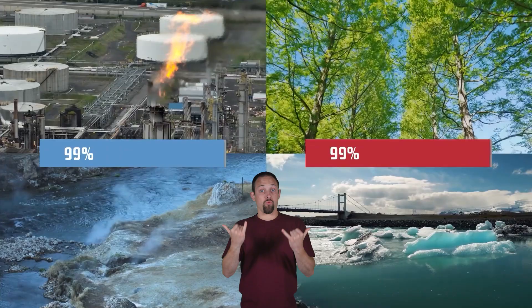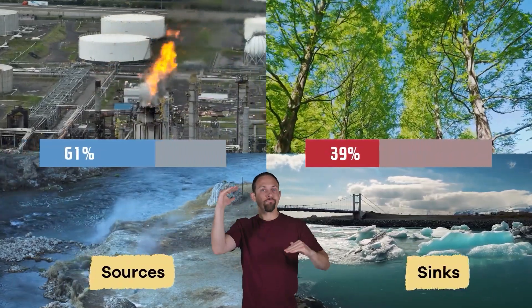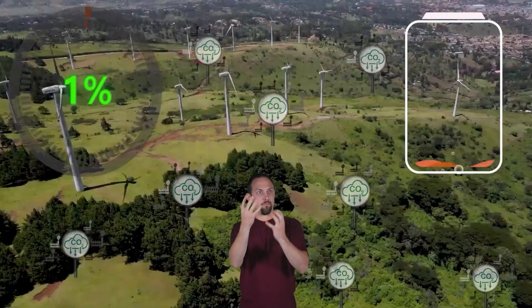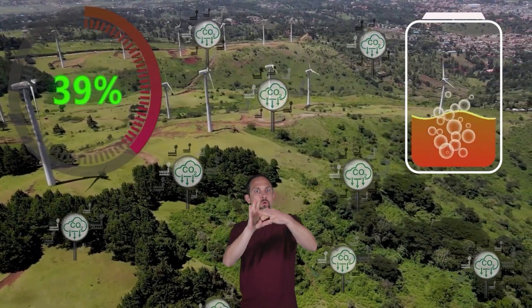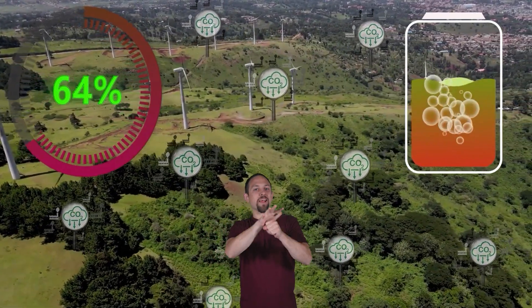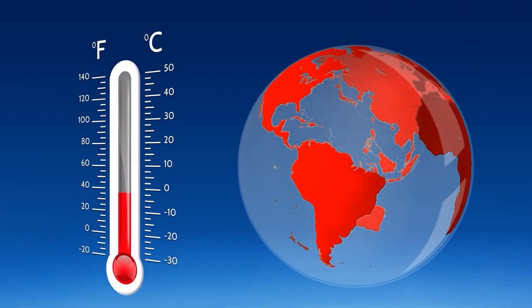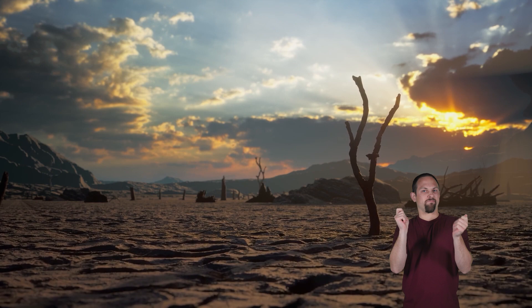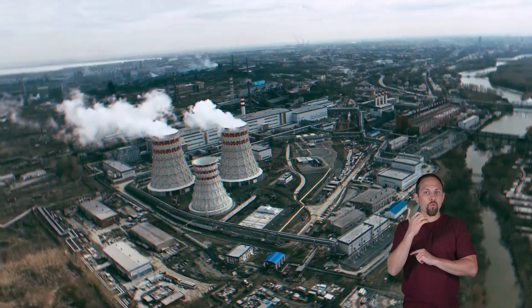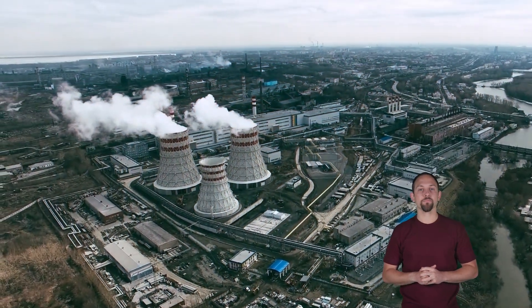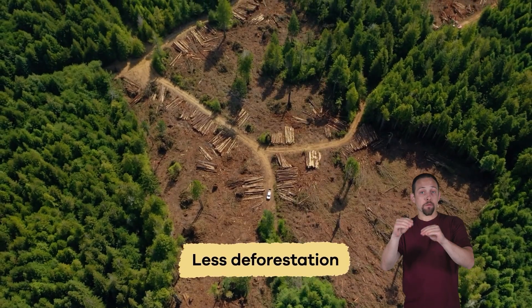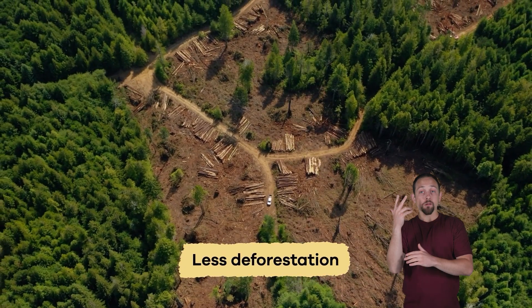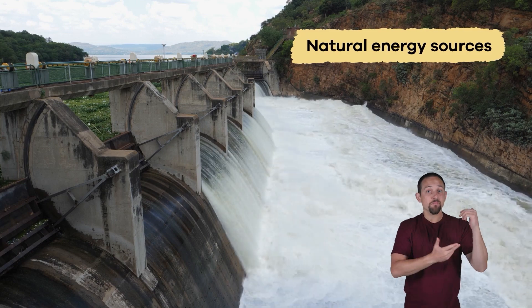Right now there is an imbalance between the sources and sinks of carbon. There is too much carbon being released into the atmosphere and not enough being absorbed. This has led to the earth becoming warmer, which has led to global warming or climate change.